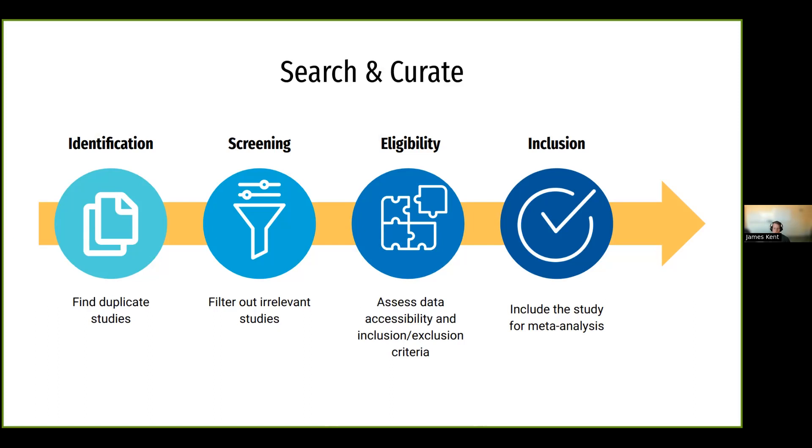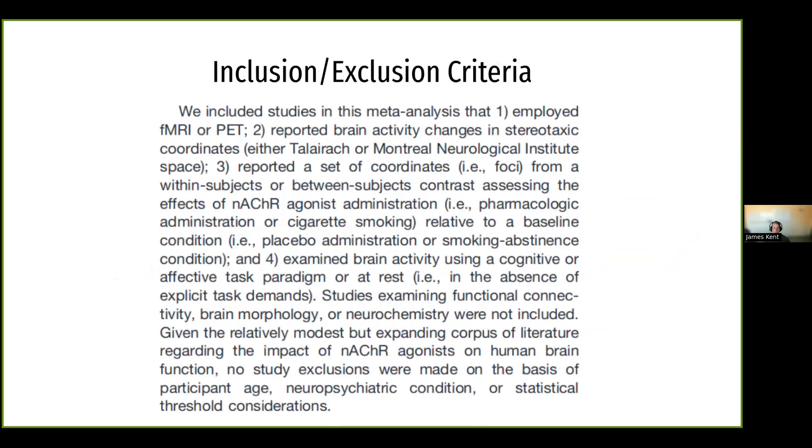And the next step would be eligibility in which we dive into what the eligibility criteria for the studies are, and that will likely require reading the title and abstract and perhaps even the methods in order to ascertain whether the study belongs inside the study set. And then finally, the column for inclusion means that we are actually including the study for the meta-analysis. So within the original paper, here is the inclusion-exclusion criteria.